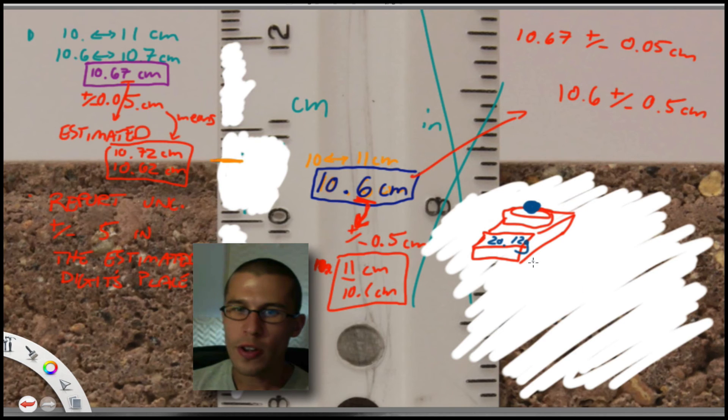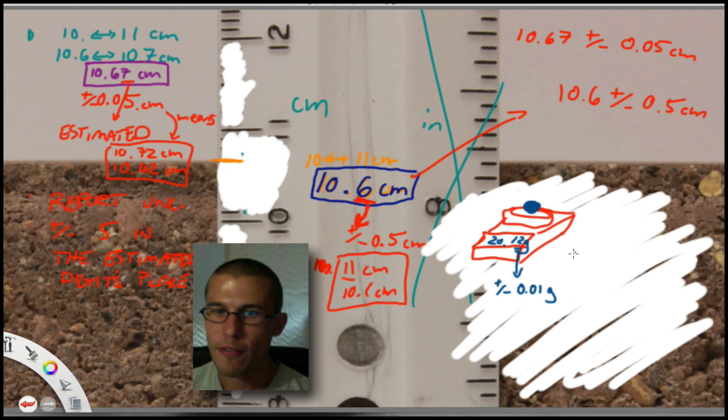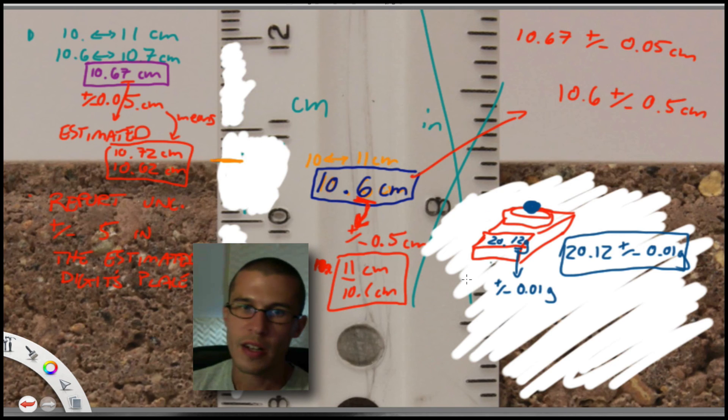What you can do is you can say, okay, well that last digit is that two there. So I can say that this is plus or minus for a digital scale here, plus or minus 0.01 grams, because this last estimated digit is much more closely estimated than what we see with an analog scale. So my final reported uncertainty here is 20.12 plus or minus 0.01 grams. Okay, so that should clear up the difference between digital and analog and the last estimated digit there.